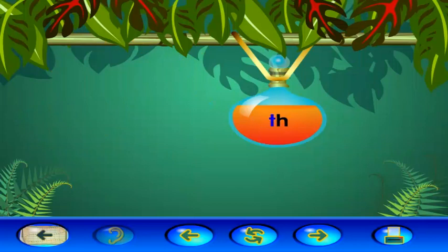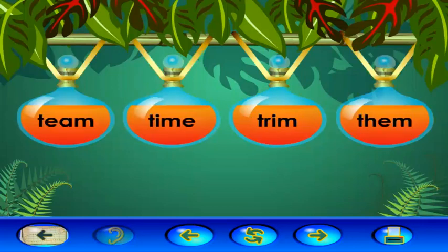When the letters T and H are together, they make the sound TH, like in the word them. Let's find words with the sound TH. Click the word them. Them. Super! Remember, click the word that. That. Great! You're great at finding words!